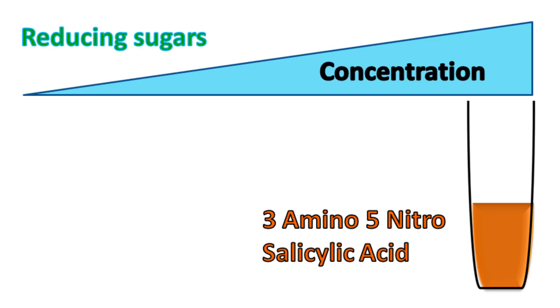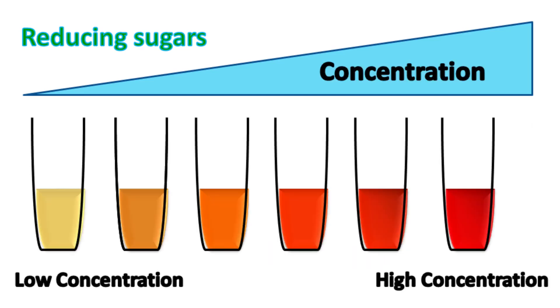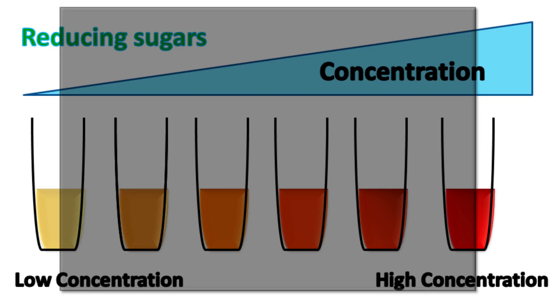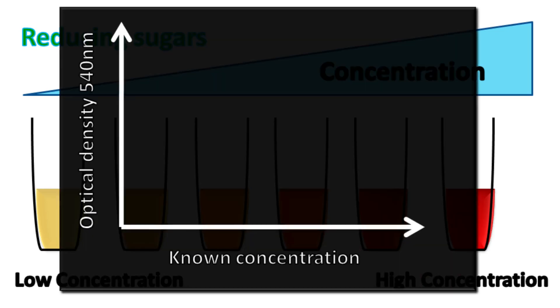With an increase in the concentration of reducing sugar, the intensity of orange color increases. The optical density of this orange color can be measured at 540 nanometers.